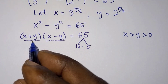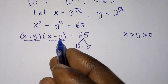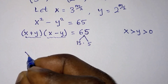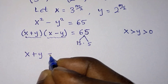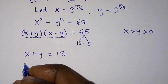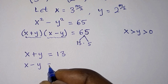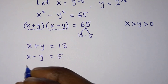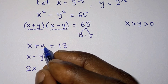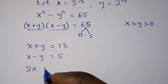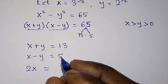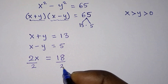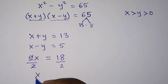Since x + y is the larger factor, we set x + y = 13 and x - y = 5. Summing these two equations, we get 2x = 18. Dividing both sides by 2, we find x = 9.